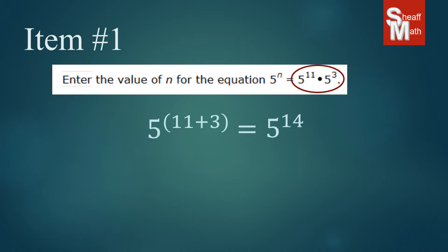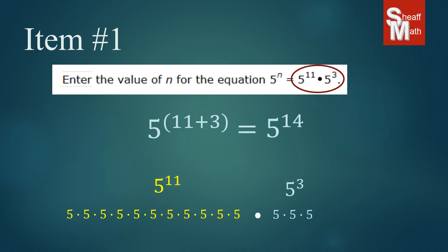Now if you're wondering why we do that: when you have 5 to the 11th, what you really have is 5 times 5 times 5 all the way — 11 of them. And 5 to the third is three fives multiplying together. When we combine them all together, we have 14 fives, and so that makes 5 to the 14th.